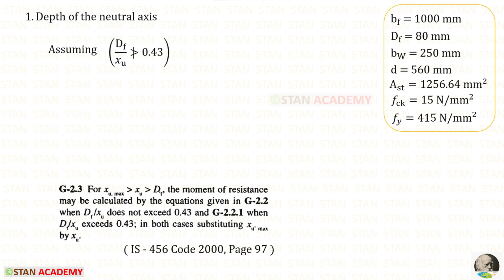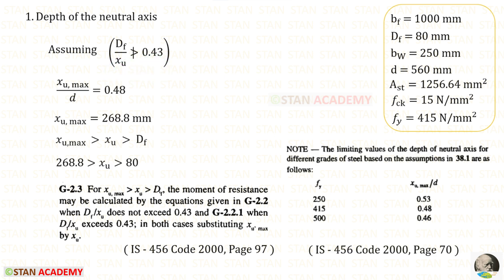But still we need to follow the class G 2.3. Let us assume that Df upon xu does not exceed 0.43. For Fe415, xu max upon D is 0.48. D is 560. 0.48 into 560, we will get 268.8 mm.